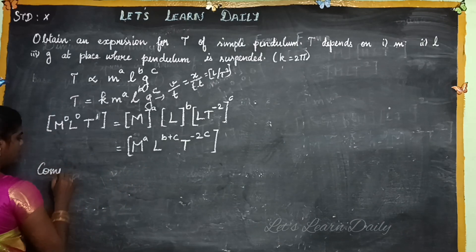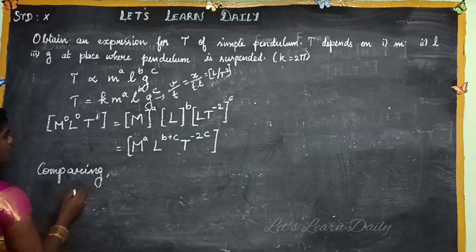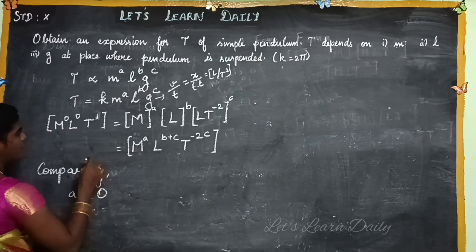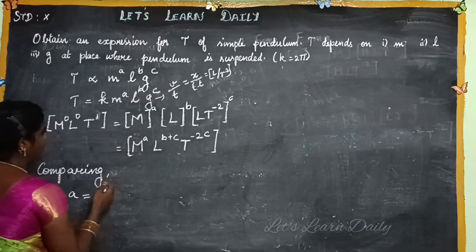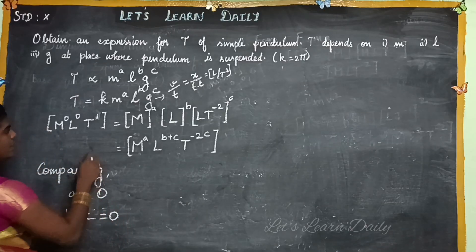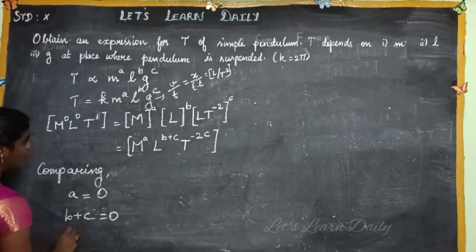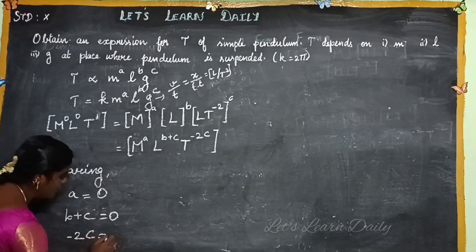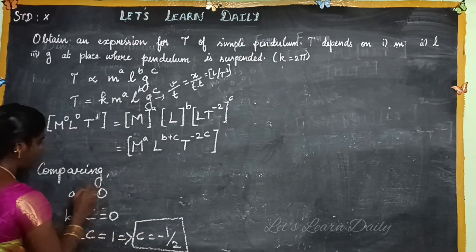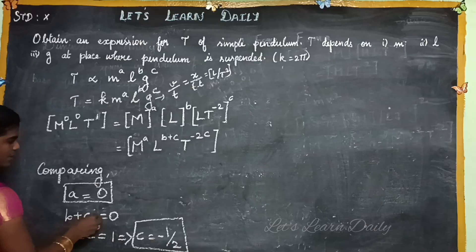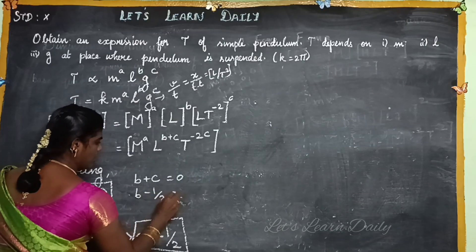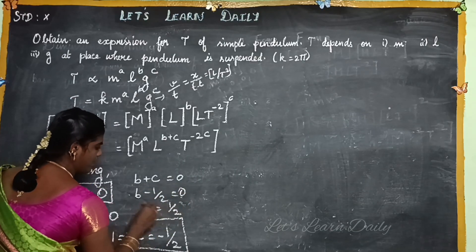Comparing the two sides: equating powers of M gives A = 0. Equating powers of L gives B + C = 0. Equating powers of T gives −2C = 1, so C = −1/2. From B + C = 0, we get B = 1/2.